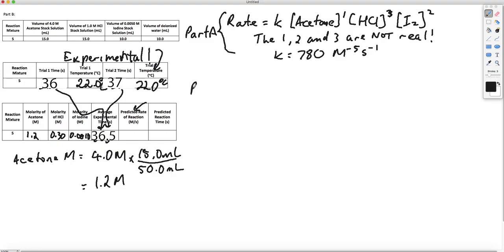I'm going to write this down. Predicted rate now. This is as opposed to the experimental rate. The experimental rate we found by experiment. This is what we're finding by doing some math. So predicted rate is going to be K, acetone, HCl, acetone to the 1, HCl to the 3, I2 squared.